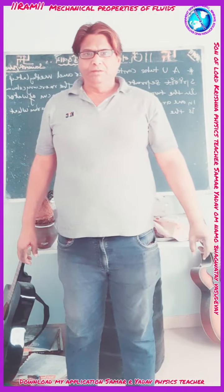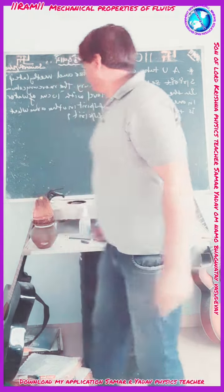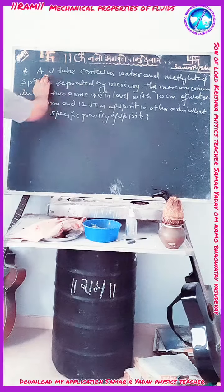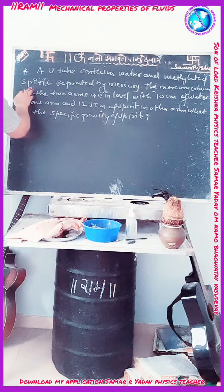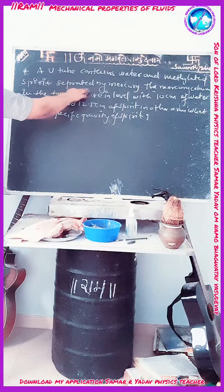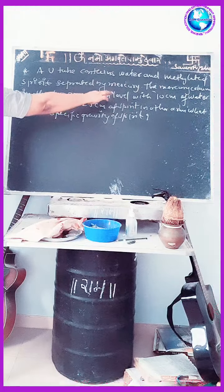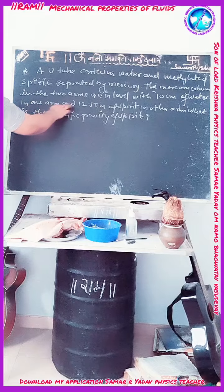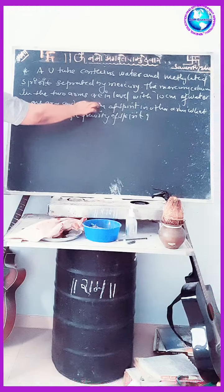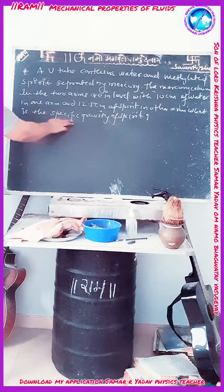Today in physics, we will see a numerical based on the mechanical properties of fluids. The numerical is like this: A U-tube contains water and methylated spirit separated by mercury. The mercury columns in the two arms are level, with 10 cm of water in one arm and 12.5 cm of spirit in the other arm. What is the specific gravity of the spirit?